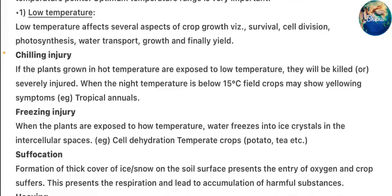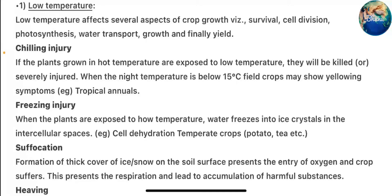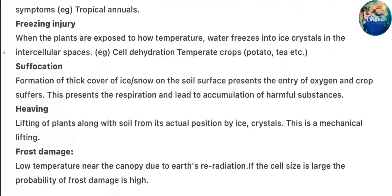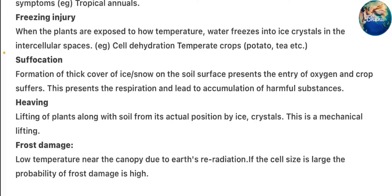Low temperature affects several aspects of crop growth including survival, cell division, photosynthesis, water transport, growth, and finally yield. Chilling injury occurs when plants grown in hot temperatures are exposed to low temperatures — they may be killed or severely injured. When night temperature is below 15°C, field crops may show wilting symptoms. Freezing injury occurs when plants are exposed to very low temperatures and water freezes into ice crystals in the intercellular spaces, causing cell dehydration — this affects temperate crops such as potato and tea.